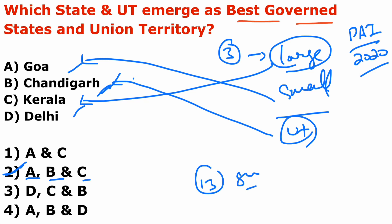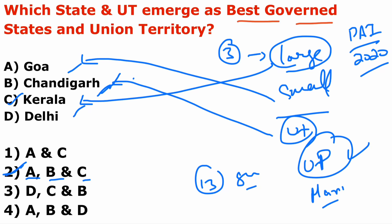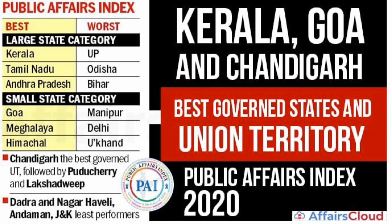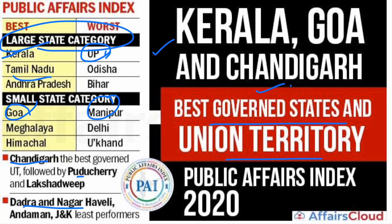The least performer in the large state is Uttar Pradesh. The least performer in the small state is Manipur. The least performer in the UTs is Dadra and Nagar Haveli. To summarize: best in large state is Kerala, worst is UP; best in small state is Goa, worst is Manipur; best UT is Chandigarh, worst is Dadra and Nagar Haveli. Mark this as very important.